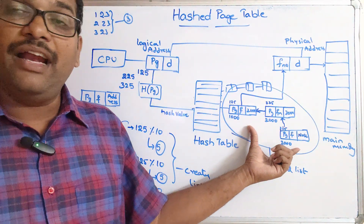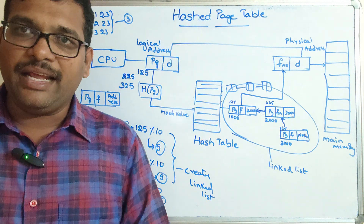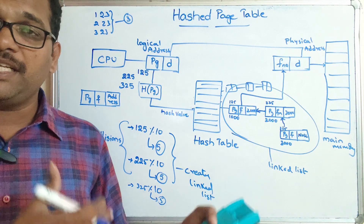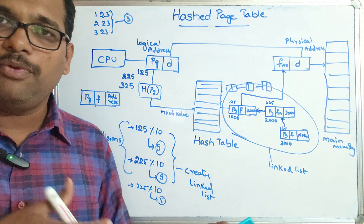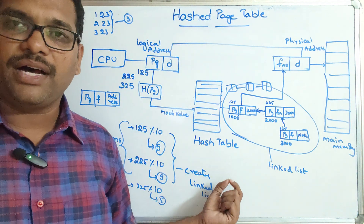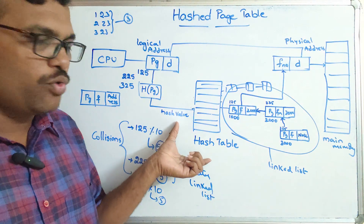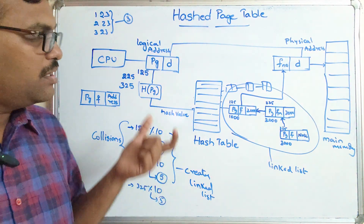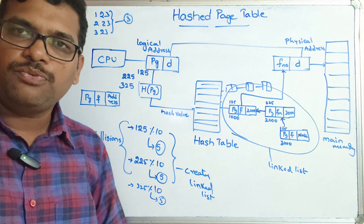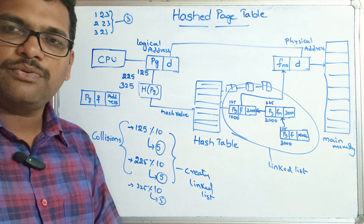This is the hashed page table — one technique to structure a page table. In our previous session we saw the hierarchical page table, where the page table was divided into multiple smaller tables. Here, access time is very fast. For large numbers of entries, the hashed page table is suitable and ensures fast access. Hope you understood this concept — if you enjoyed the session, like, share with your friends, and don't forget to subscribe. Thanks for watching.